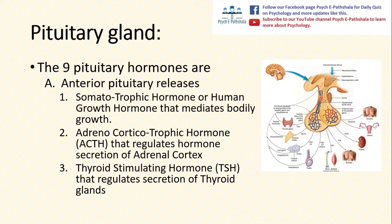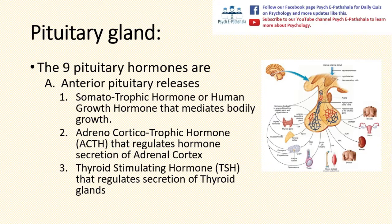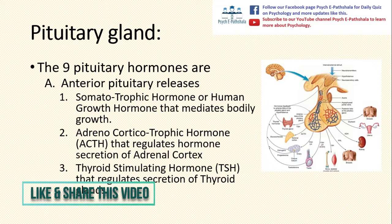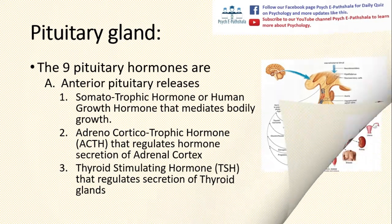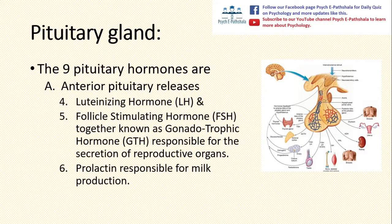The hormones released from the anterior pituitary are: first, somatotrophic hormone or human growth hormone, which mediates bodily growth. Second is adrenocorticotrophic hormone or ACTH, which regulates hormone secretion of the adrenal cortex. Third is thyroid stimulating hormone or TSH, which regulates the secretion of the thyroid gland. Fourth is luteinizing hormone and fifth is follicle stimulating hormone — both together known as gonadotrophic hormone or GTH, responsible for the secretion of reproductive organs.